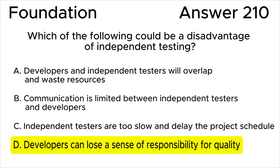All the rest of the answers are wrong. Answer A is invalid. This statement implies inefficiency due to redundancy between developers and independent testers. However, the idea of overlap and waste of resources is not a universal disadvantage of independent testing. In fact, proper coordination and division of responsibilities can minimize such overlap.